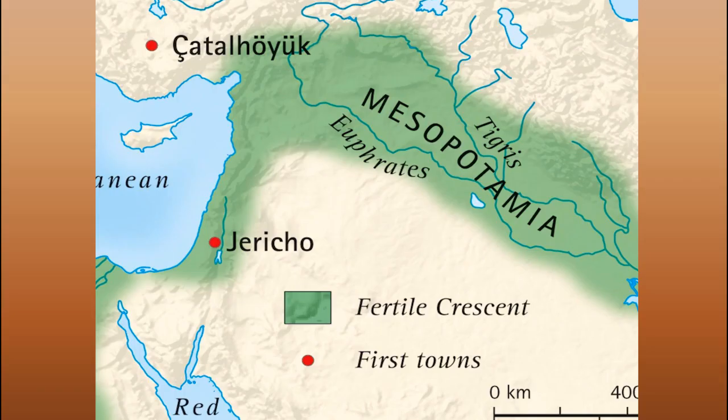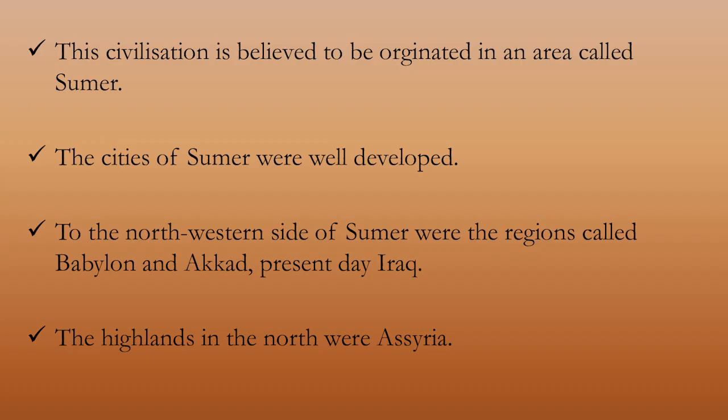Here is the image — you can see the crescent shape of the fertile region. Mesopotamia: the land between rivers. This civilization originated in Sumer, where cities were well developed and advanced. To the northwest of Sumer were Babylon and Akkad, present-day Iraq.